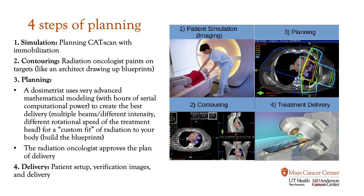Over here is displayed the four steps of radiation planning. Step one is we take a normal CAT scan and use devices for immobilization. We then take the pictures of this CAT scan and move on to step two, which is contouring. During contouring, a radiation oncologist such as myself precisely defines the anatomic targets — where we want the radiation to go and where we do not — essentially hitting the bad stuff and avoiding the good stuff. We do this in a way similar to how a surgeon can operate, although during this process I can delete and redraw my approach.